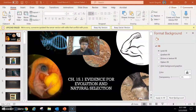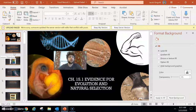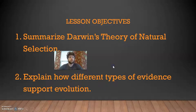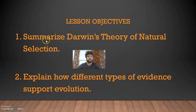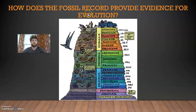Today's video is going to break down fossils and how they give us evidence for evolution. This week our goal is to do two things: one, summarize Darwin's theory of natural selection, and two, explain how different types of evidence support evolution. This video further analyzes goal two. The question today: how does the fossil record provide evidence for evolution?